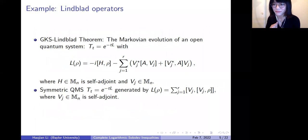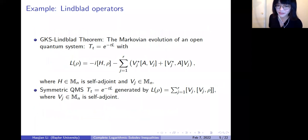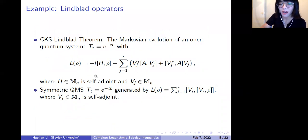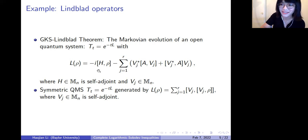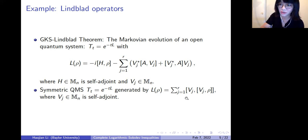This example is also called the GKS-Lindblad theorem. It tells us the dynamical evolution of any quantum system can be described by this kind of semigroup, where the Lindblad operator can be written as a summation of two parts. The first part is like a commutator, where H is self-adjoint. The second part is more like a double commutator. Since today we only focus on symmetric QMS, we are going to further simplify this — we only focus on the generator defined as a double commutator, where V_j is self-adjoint.